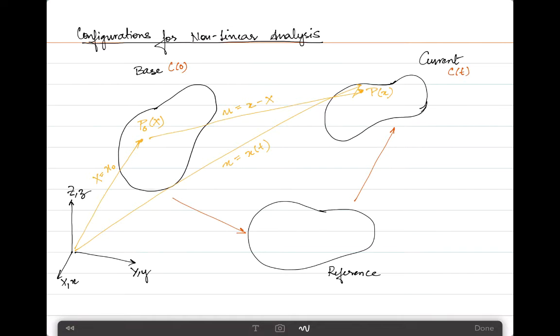There are three different descriptions commonly used in nonlinear analysis: the total Lagrangian, the updated Lagrangian, and the co-rotational description. The Lagrangian is opposed to the Eulerian method.